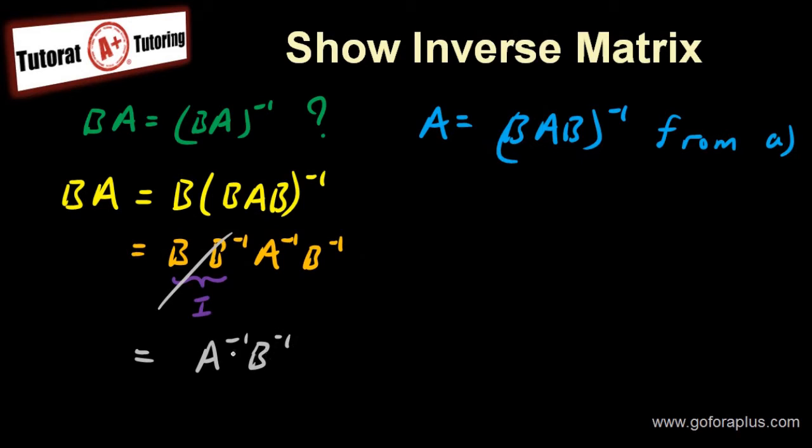And I need to extract the minus 1. So take out the minus 1 outside and swapping the two matrices. So this is going to be BA minus 1. And this is what I need to prove, right? BA equals to BA inverse.